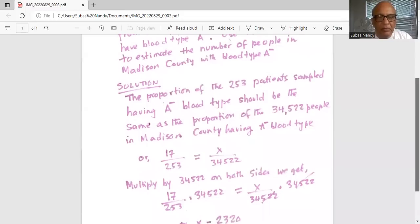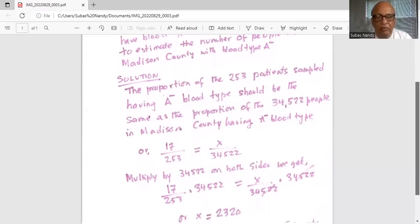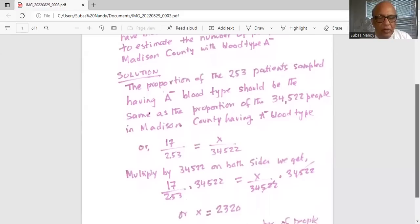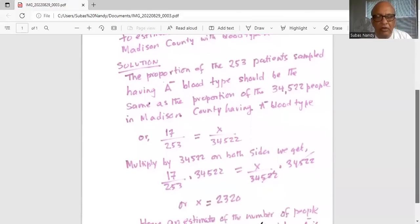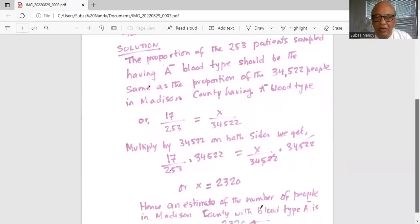So we multiply by 34,522 on both sides. We get 17 divided by 253 multiplied by 34,522 on the left hand side equal to X divided by 34,522 multiplied by 34,522.